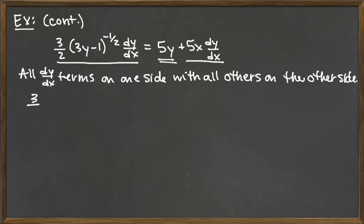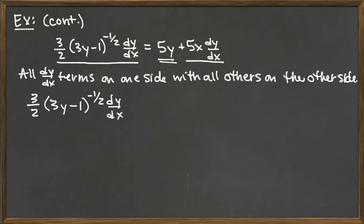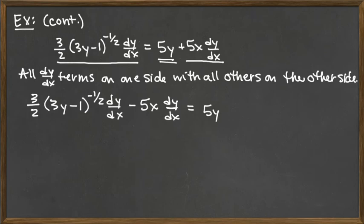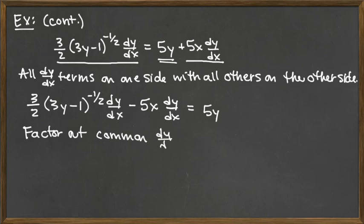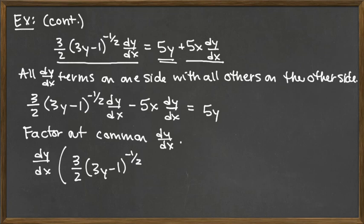We have this dy/dx term, this dy/dx term, and this non-dy/dx term. I'm going to gather all dy/dx terms on the left hand side and leave the single non-dy/dx term on the right hand side. So I'll copy the first term as is: 3/2 times 3y minus 1 raised to the negative 1/2 times dy/dx. Then subtract 5x dy/dx from both sides, leaving 5y on the right hand side. Now we can factor out the common factor of dy/dx: dy/dx times the quantity 3/2 times (3y minus 1) to the negative 1/2, minus 5x, equals 5y.